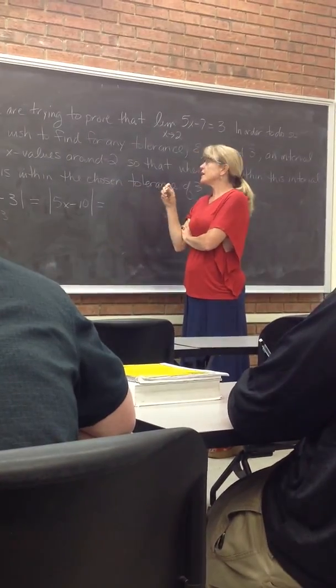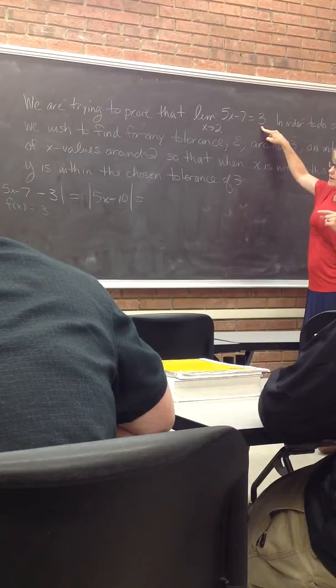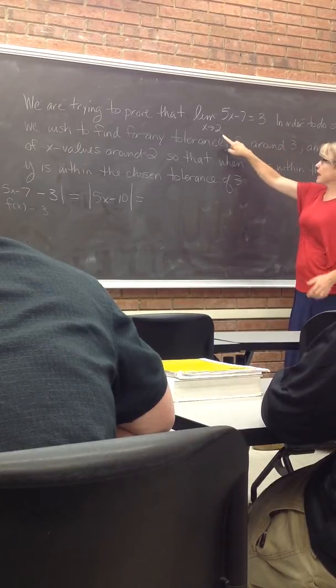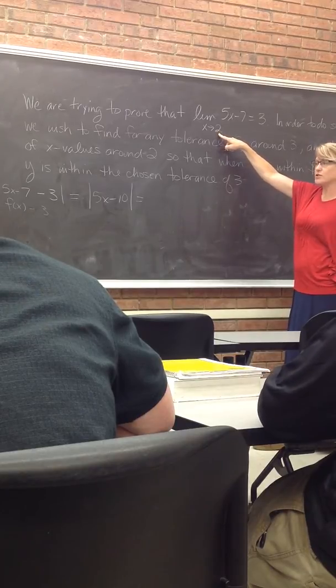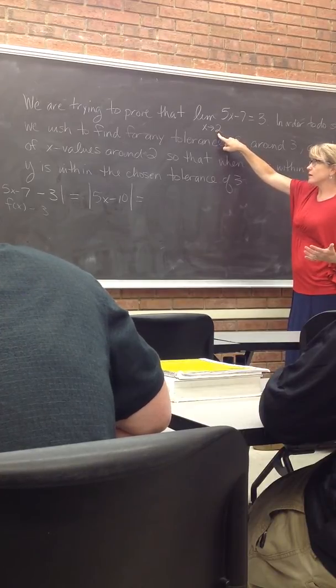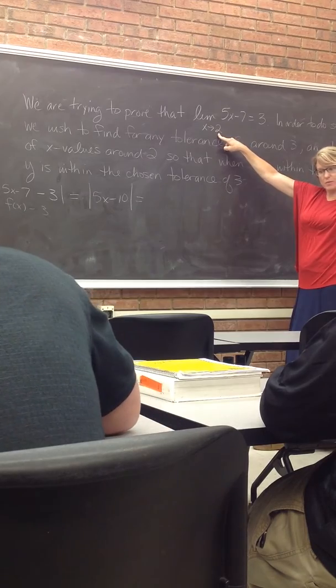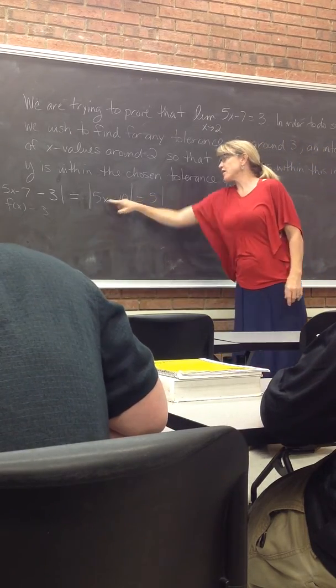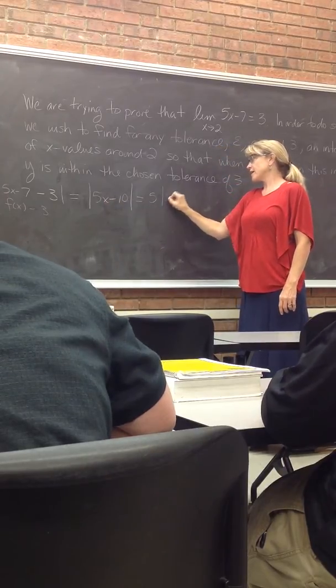And if the limit is correct, you always are going to be able to factor out x minus whatever you're taking the limit to. So we're taking the limit to 2, I should be able to factor out x minus 2. You always will be able to. Sometimes the numbers won't be as clean as this one. So if I factor out 5, what am I left with? x minus 2, x minus 2.